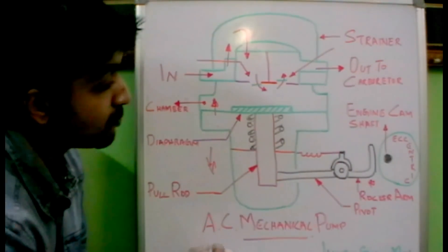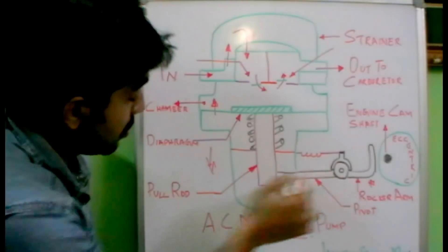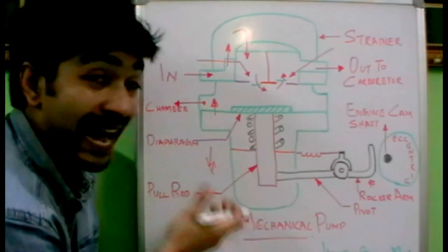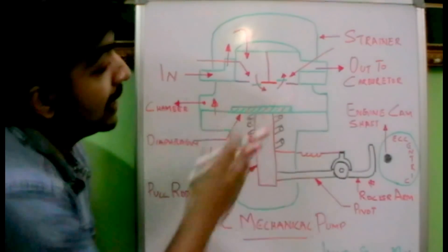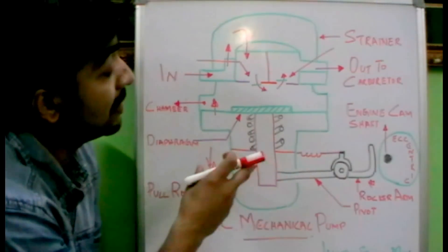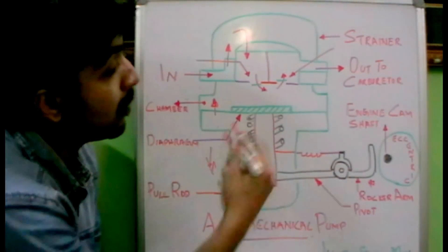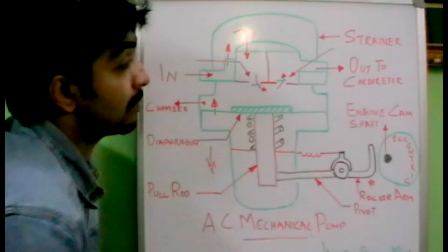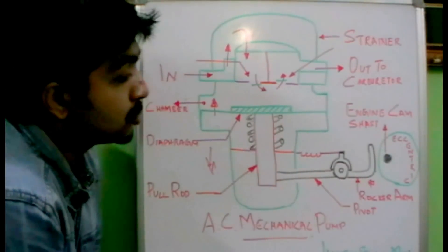So to avoid that, the flexible connection of the rocker arm and the push rod and pull rod has been employed to avoid such a problem from occurring while the engine is running when the carburetor is full.